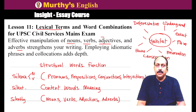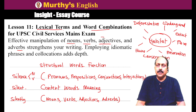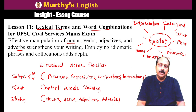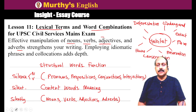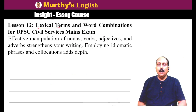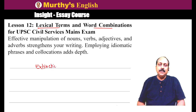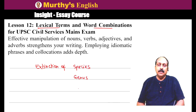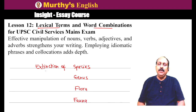Many IAS aspirants are already good at lexical terms and word combinations because they acquire a lot of knowledge — and along with that knowledge, they get the terms. However, it is always better to focus on lexical terms and spend time using the right word at the right time and in the right place. Lesson 12 continues this: for example, 'extinction of species,' 'extinction of a particular genus,' 'extinction of fauna of a region.' English is a combinational language, and using the right combinations makes all the difference.